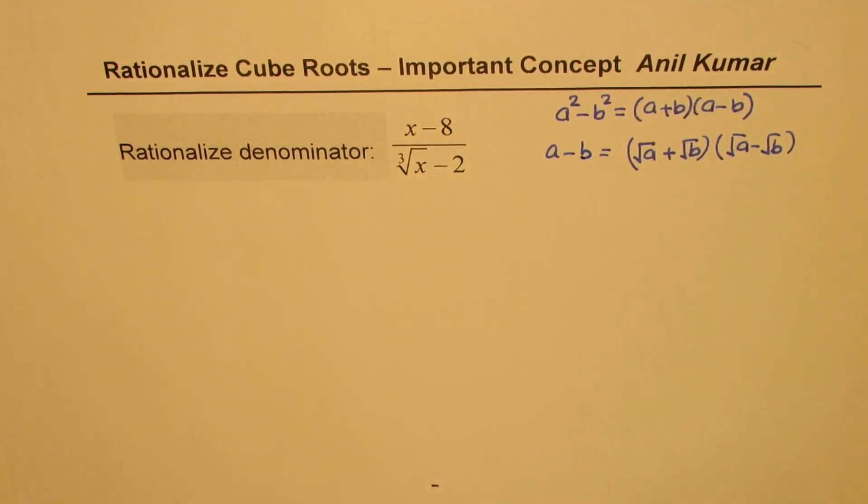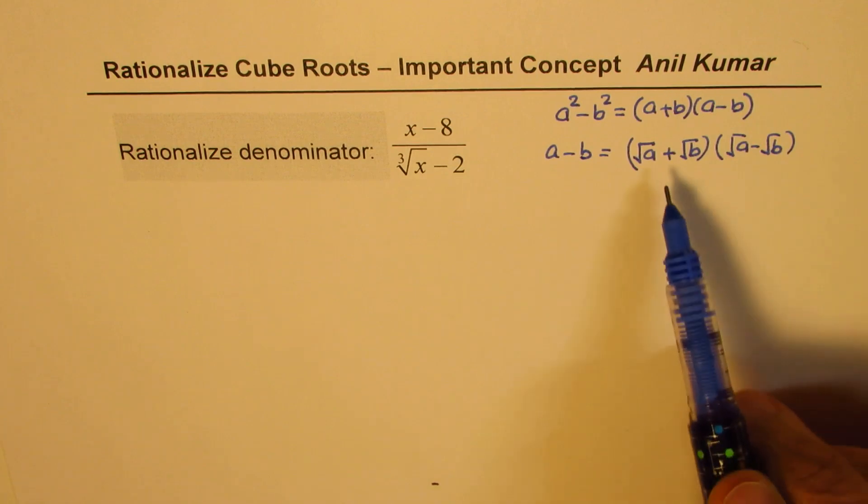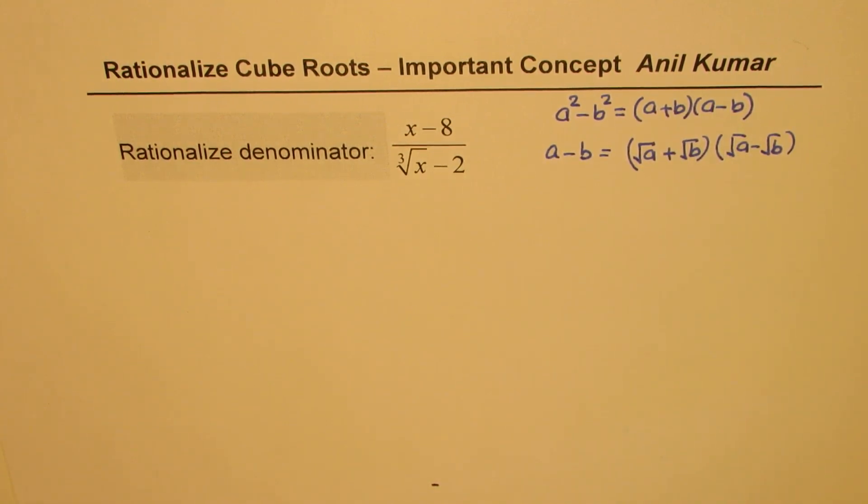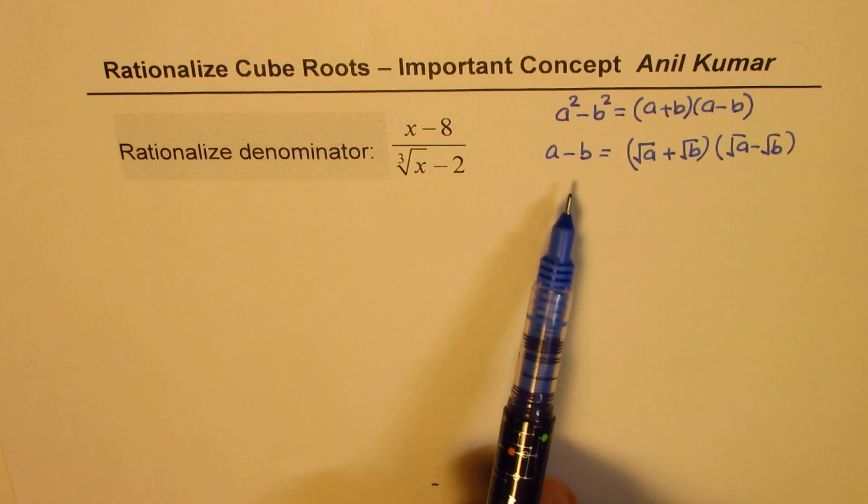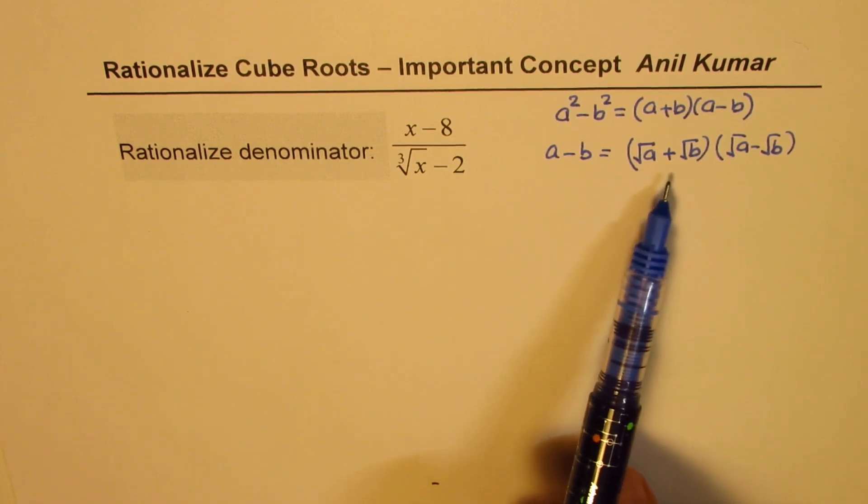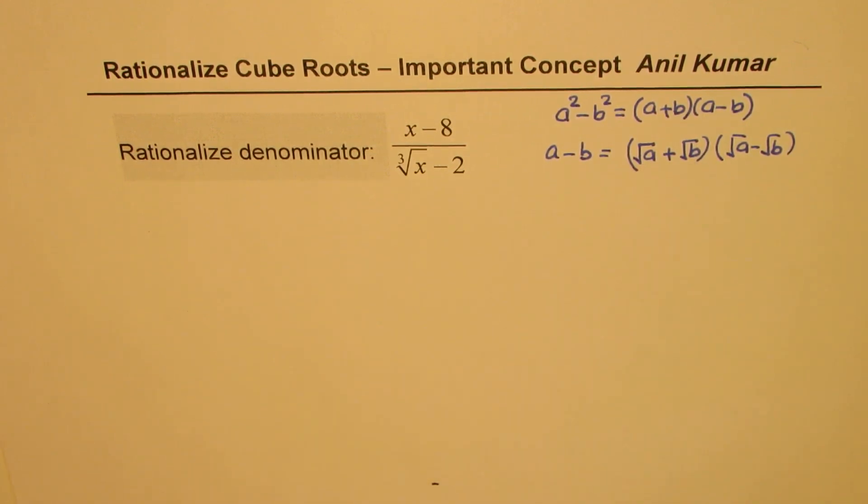So, when you rationalize, you actually get rid of the radical part. That is the basic concept, which we apply to rationalize most of the time while working with square roots.